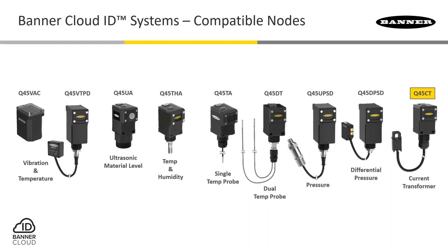Last but not least, we have our current sensor that uses a current transformer to measure current draw, helping to reveal issues with critical asset performance. Use this sensor to understand variation of power consumption throughout your operation and determine areas in which there are excess or limited behaviors.